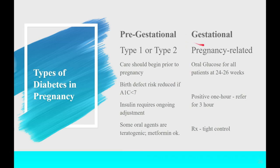Next, there's gestational diabetes. Gestational diabetes is pregnancy-related — it's related to the release of human placental lactogen, or HPL, by the placenta, which creates a diabetogenic state.